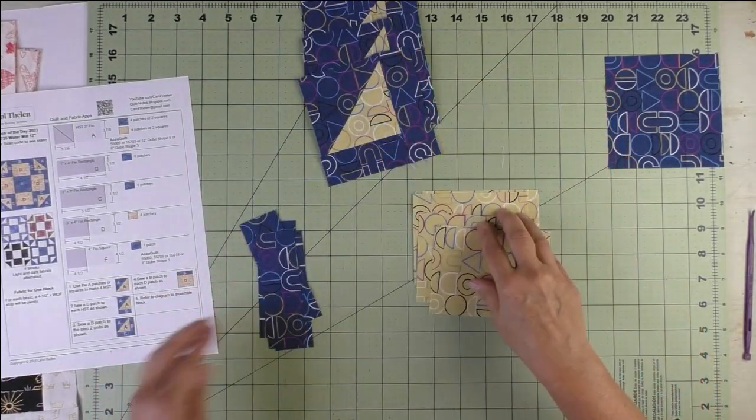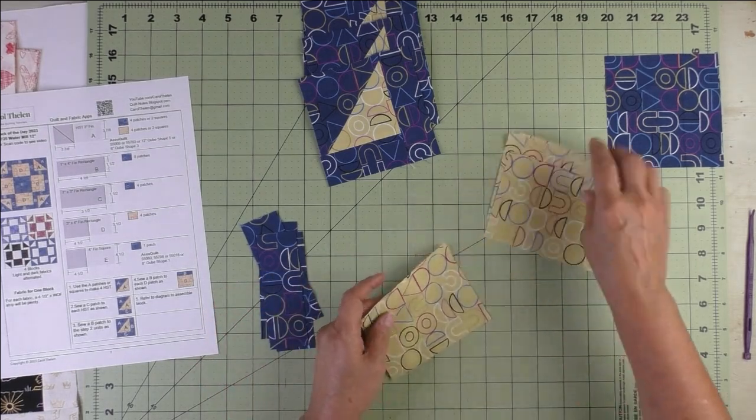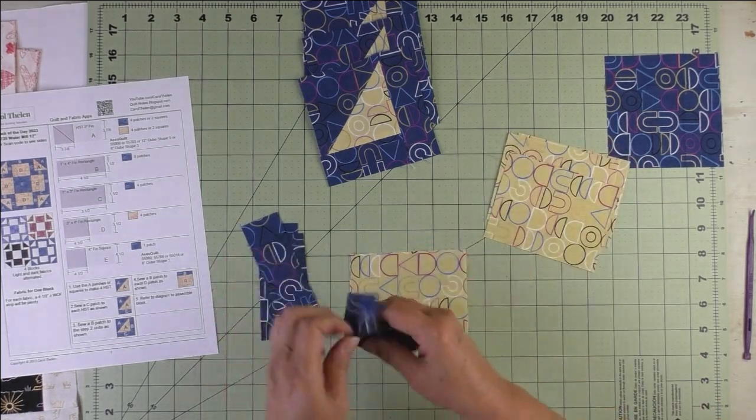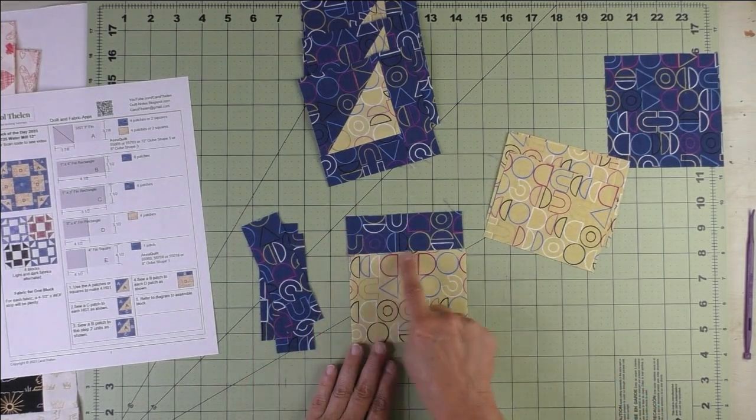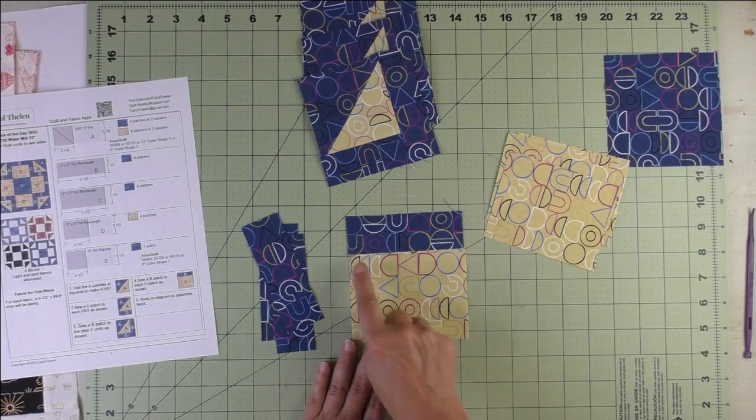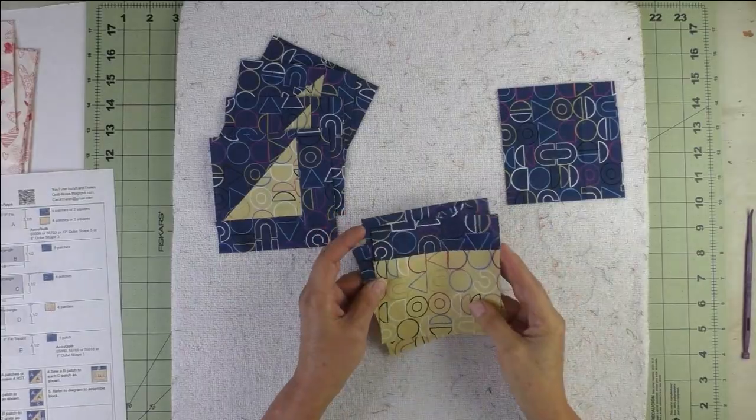Now we'll go to step four. We'll take patch D and the remaining patch Bs and stitch them like this. There's only one way it can go because this is four and a half inches and this is three and a half inches. Stitch all four like this and press the seams open. Now these side units are done.